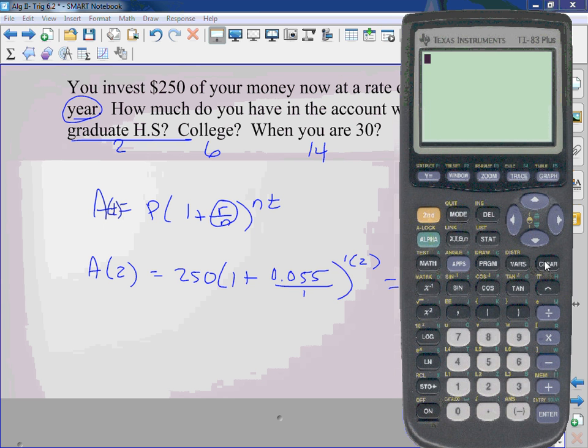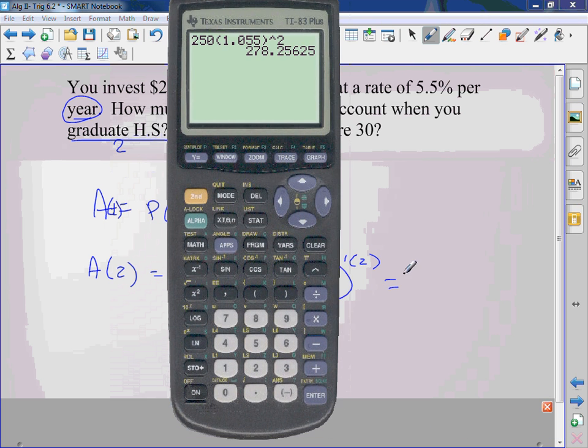We'll do it again for... T is your time. So 250, 1.055. You could do 1, but you're going to get a different answer from us. I just put 1.055 because it's 1 plus that to the second power because 1 times 2. So in 2 years you will have $278.26.